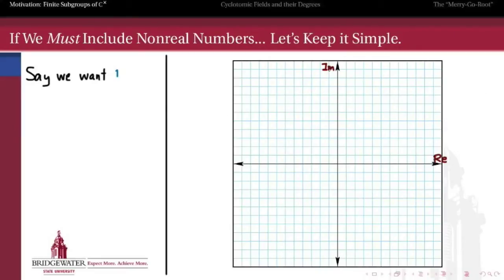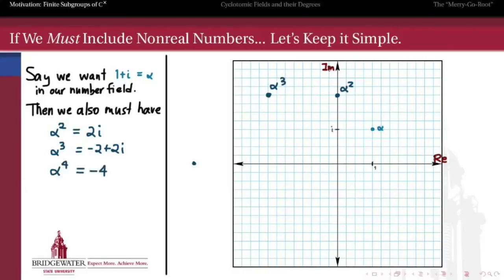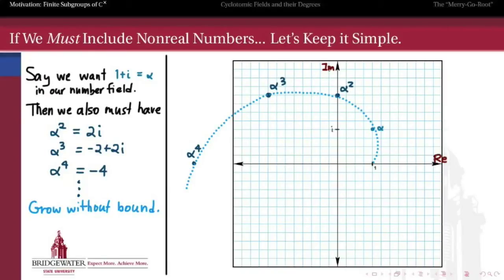Here's the motivation behind the cyclotomic fields. Let's take a complex number like 1 plus i, and suppose that we want to include 1 plus i in a number field — in other words, an extension of the rational numbers. Plotting it in our complex plane diagram, if we have 1 plus i, then because this is a field, we also have to have all of the powers of 1 plus i. The square is 2i, the third power is negative 2 plus 2i, the fourth power is negative 4, and so on. These powers keep growing — they spiral away from the origin in the complex plane, they don't repeat themselves, they grow without bound. So this is not the most efficient way to get 1 plus i in our number field.